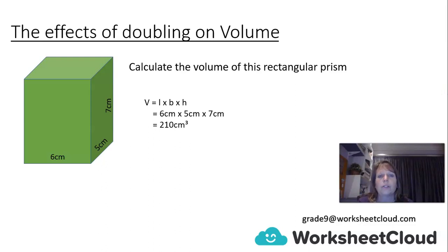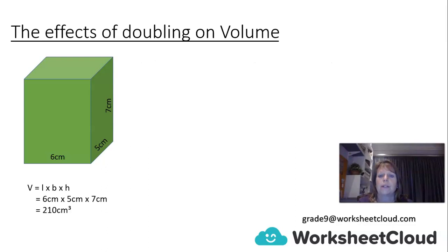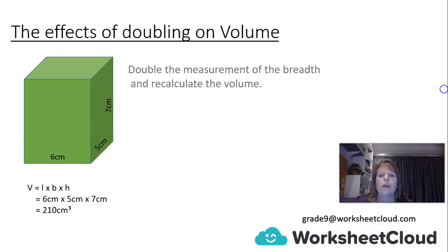Now we're going to double certain measurements and see how that affects the overall volume. First, we're going to double the measurement of the breadth — the 5 cm — and then recalculate the volume.